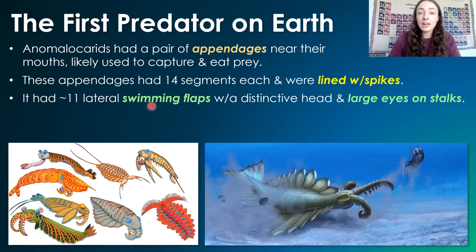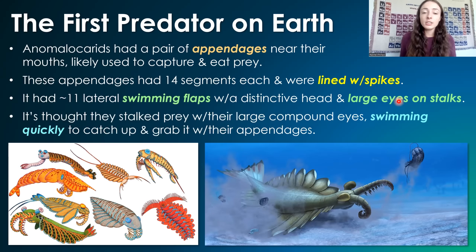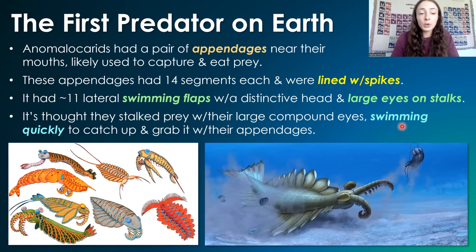They typically had 11 lateral swimming flaps with a distinctive head and large eyes on stalks. These large eyes on stalks really helped them to hunt prey. It's thought that they stalked their prey with their large compound eyes and were able to swim quickly to catch up with it and grab it with their spiky appendages.